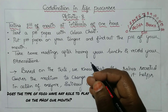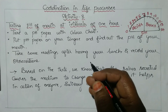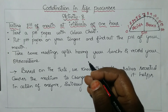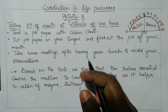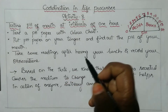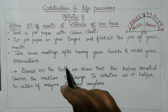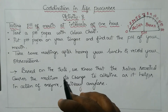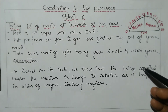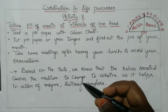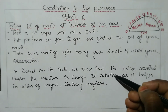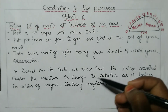Does the type of food have any role to play on the pH of your mouth? Yes, if we eat different types of food, the pH of our mouth will change. We can test the pH paper with the pH of your mouth using different food items. Based on all these tests, the saliva secreted causes the medium to change to alkaline. Saliva makes our mouth alkaline and also helps in the action of the enzyme salivary amylase, which activates carbohydrate digestion.